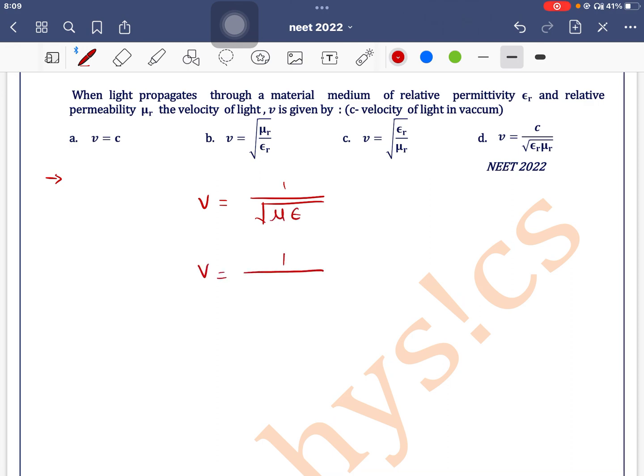Mu can be written as mu 0 into mu r, and epsilon is epsilon 0 into epsilon r. So it can be written as 1 by under root of mu 0 into epsilon 0 into mu r into epsilon r.